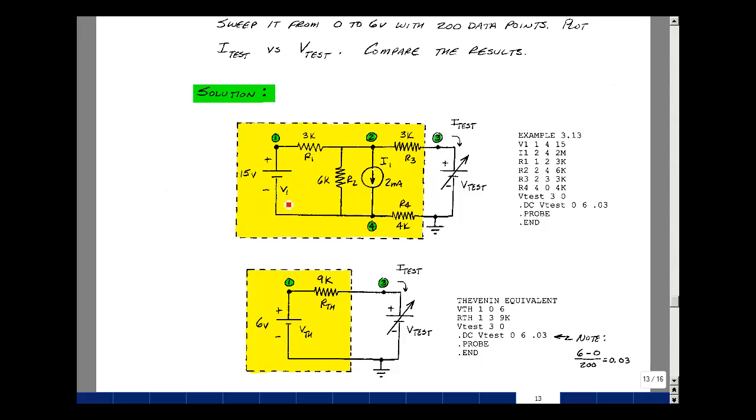A voltage source has to begin with the letter V and I call this one V1. It's between the plus node and the minus node, which in this case is one and zero and a value of 15. The value can be negative but the first node is positive, the second node is negative. So that's this one right here.